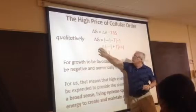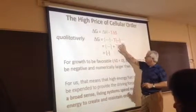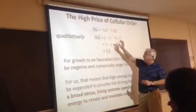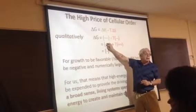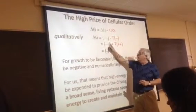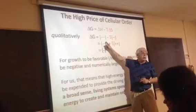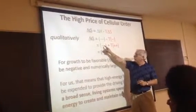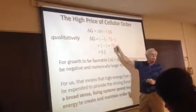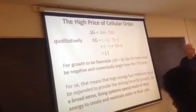We're trying to get delta G overall to be negative. So if this is a strongly positive number, then this one has to be even more strongly negative. So you have to have the heat energy release in the process overwhelm this unfavorable term to get it to be negative.